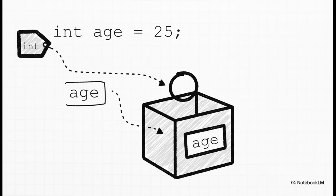So let's see what that looks like in real code. Here, int, that's our type. It tells the computer, hey, this box is for integers, whole numbers. Then we have age. That's the name, our label for the box, and 25. Well, that's the value we've put inside. See, simple as that.